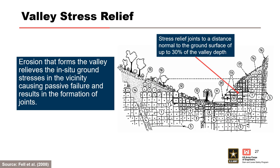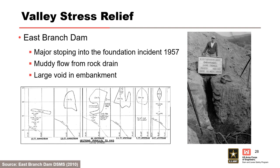One way rock defects are commonly formed in river valleys is due to stress relief. Erosion that forms the valley relieves in-situ ground stresses, causing passive failure and the formation of joints. This is very common in sandstone or shale geology. Vertical joints are typically oriented along the valley walls, creating upstream-to-downstream seepage pathways. A good example is East Branch Dam, where major stoping into the foundation occurred in 1957 — the volume of the resulting void was the size of a school bus.